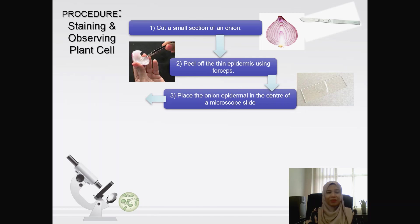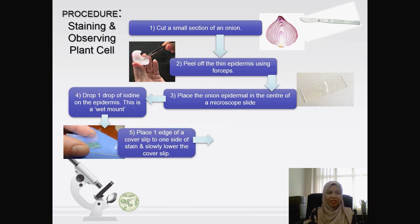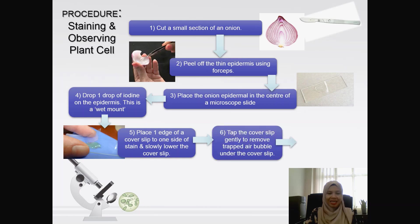Place the onion epidermis in the center of a microscope slide and stain the cells by placing a drop of iodine on the epidermis — at this point the slide is known as a wet mount. Place one edge of a cover slip to one side of the stain and slowly lower the cover slip to cover the slide.